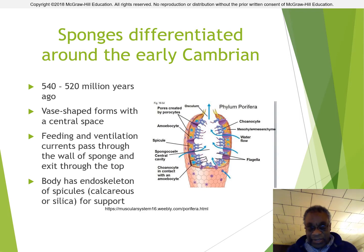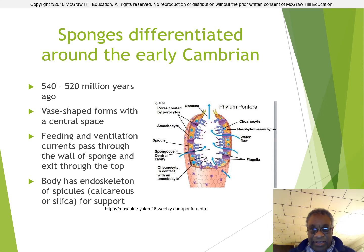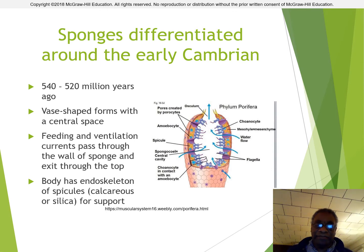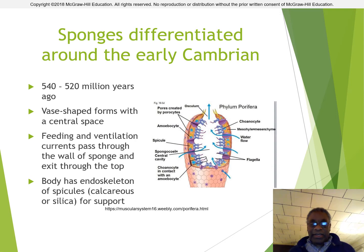Early sponges had the inside of the central space lined with choanocytes, and they had pores that allowed water to pass into the central space, past the collar cells, allowing the collars to strain out food particles. The body has an endoskeleton made out of spicules, which are calcareous crystalline structures embedded in the structure of the sponge to give it greater support.